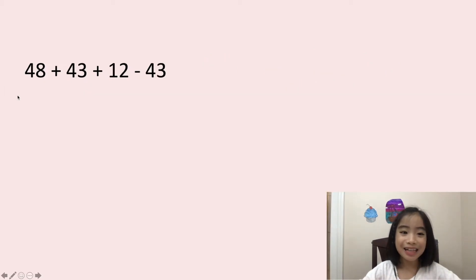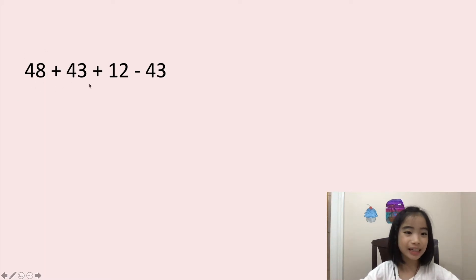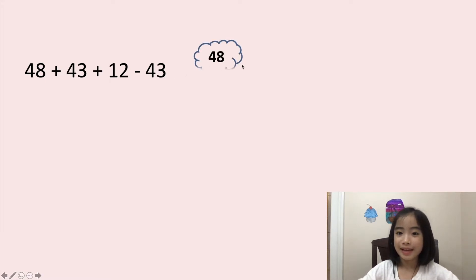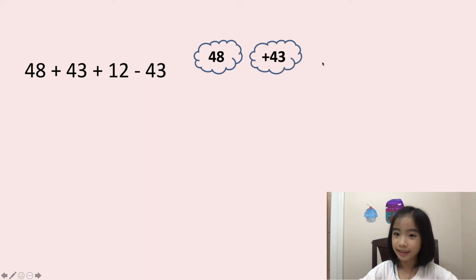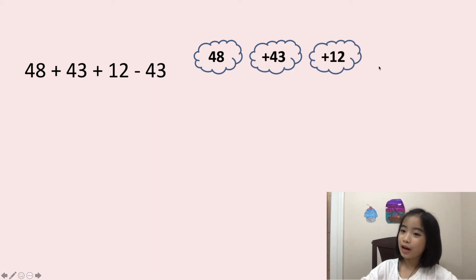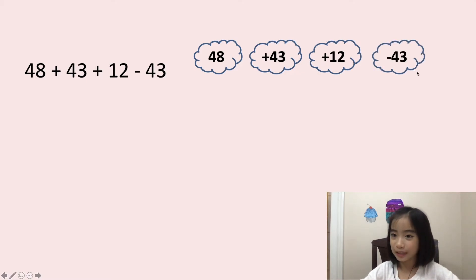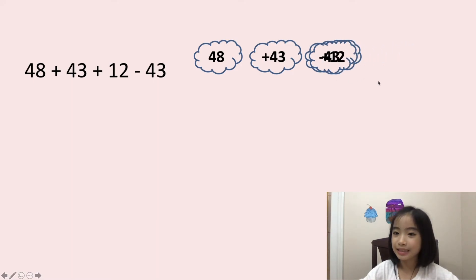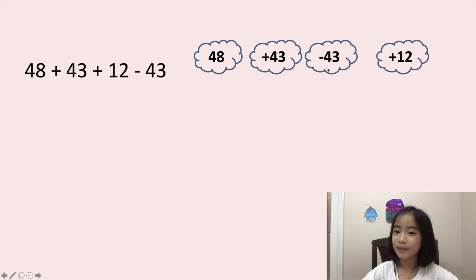Now, let's look at this expression. It's 48 plus 43 plus 12 minus 43. Here is the 48 and here is the plus 43. The plus 12 and the minus 43. Now let's switch the plus 12 and the minus 43. Here, we need to plus 43, then minus 43, which equals 0.